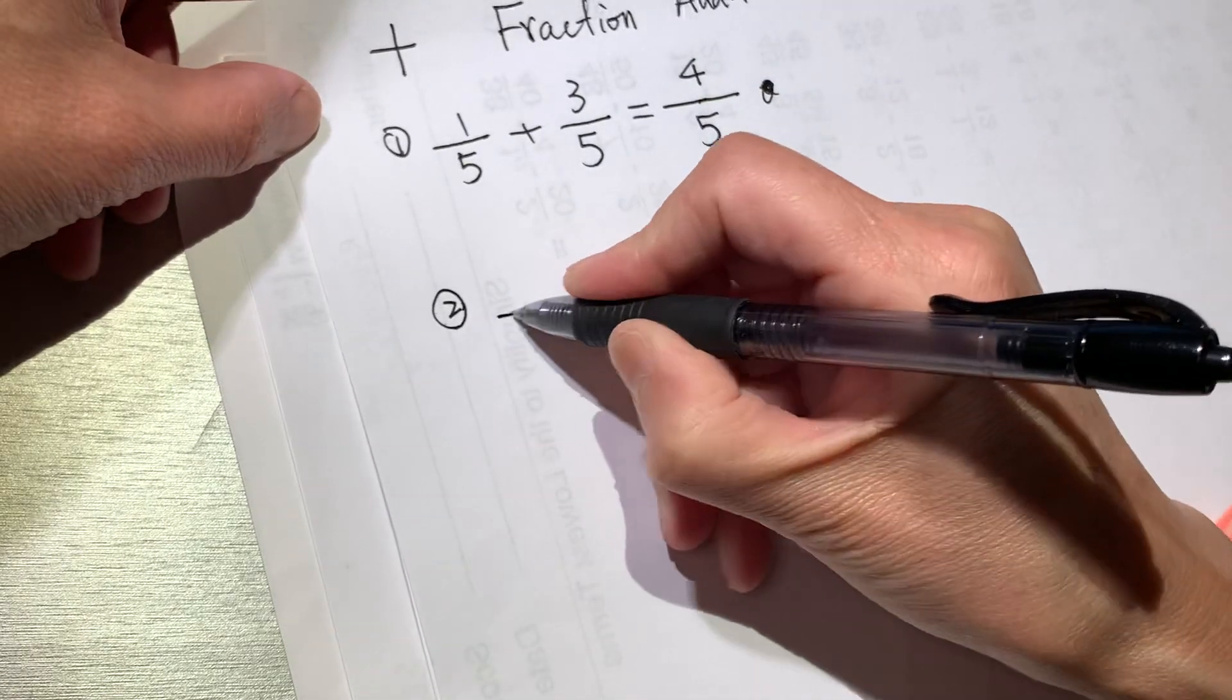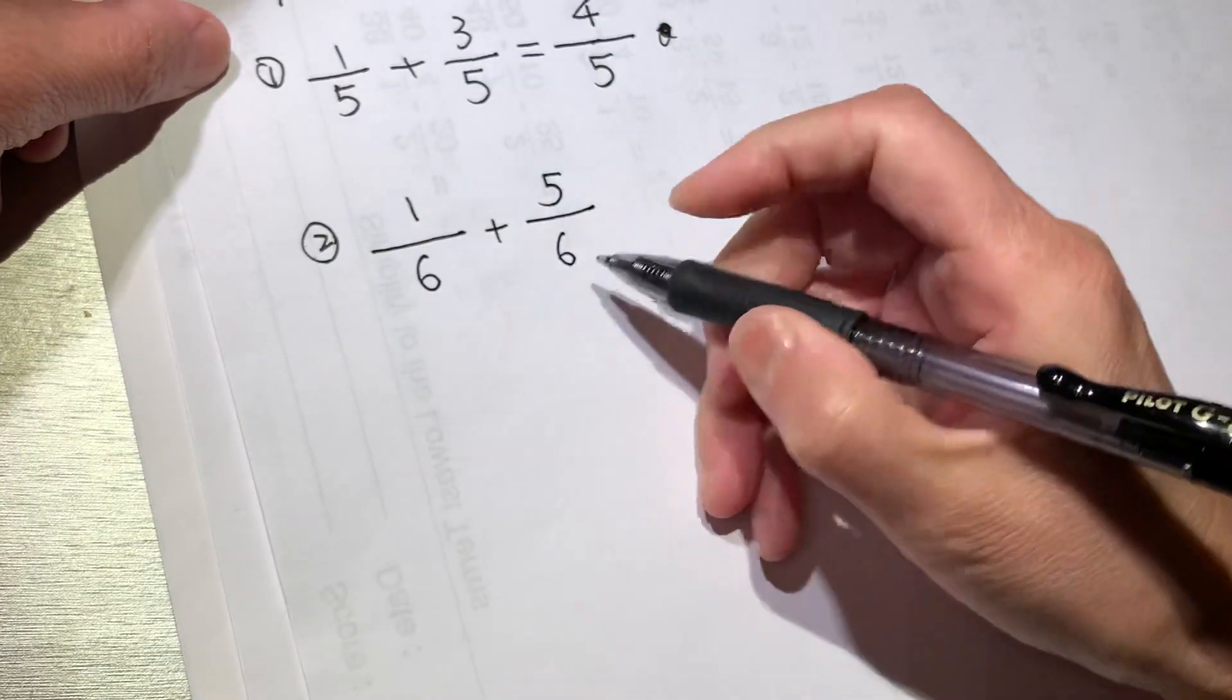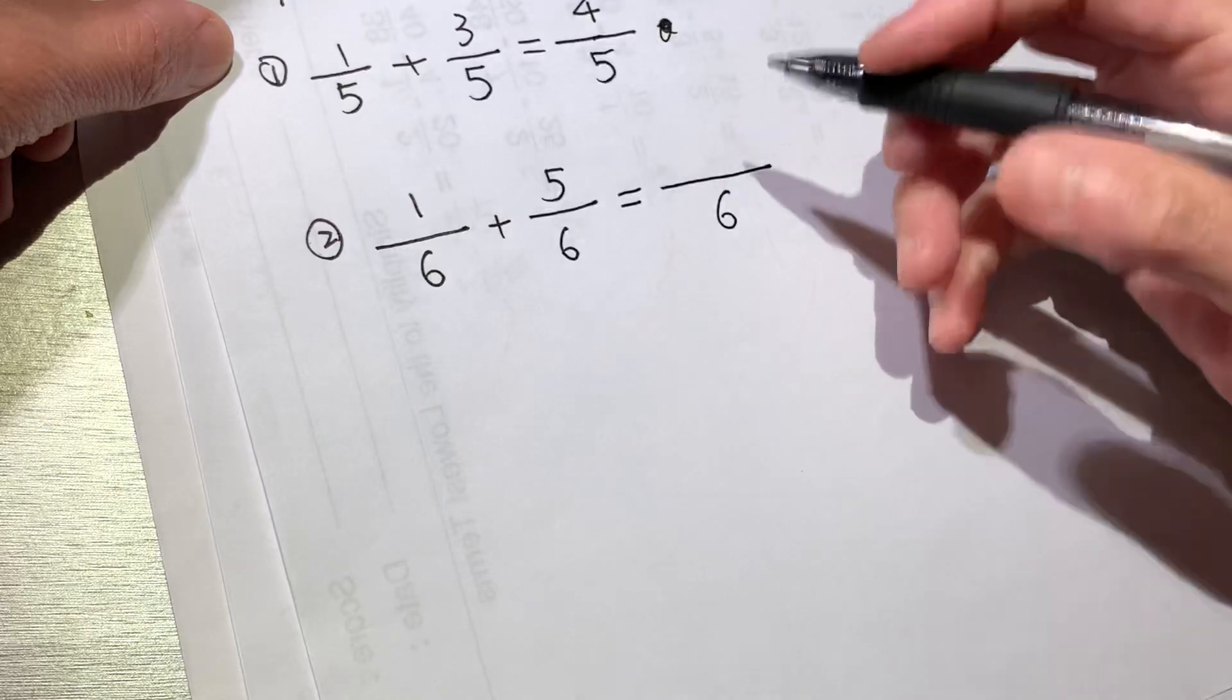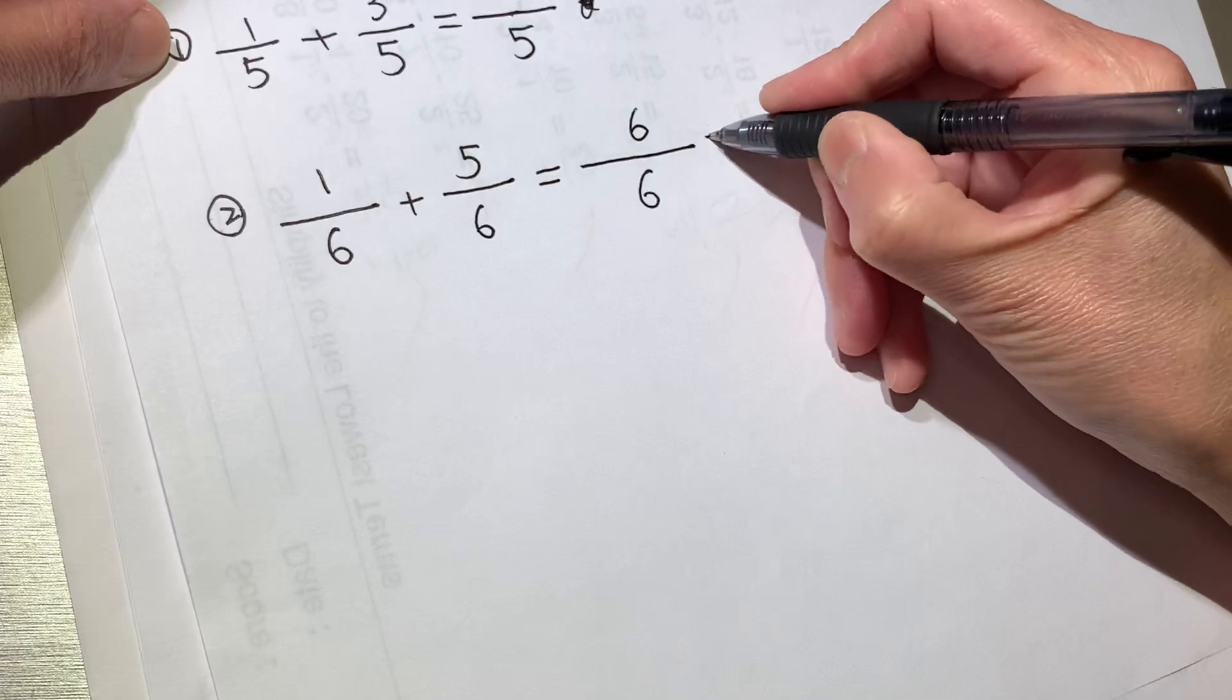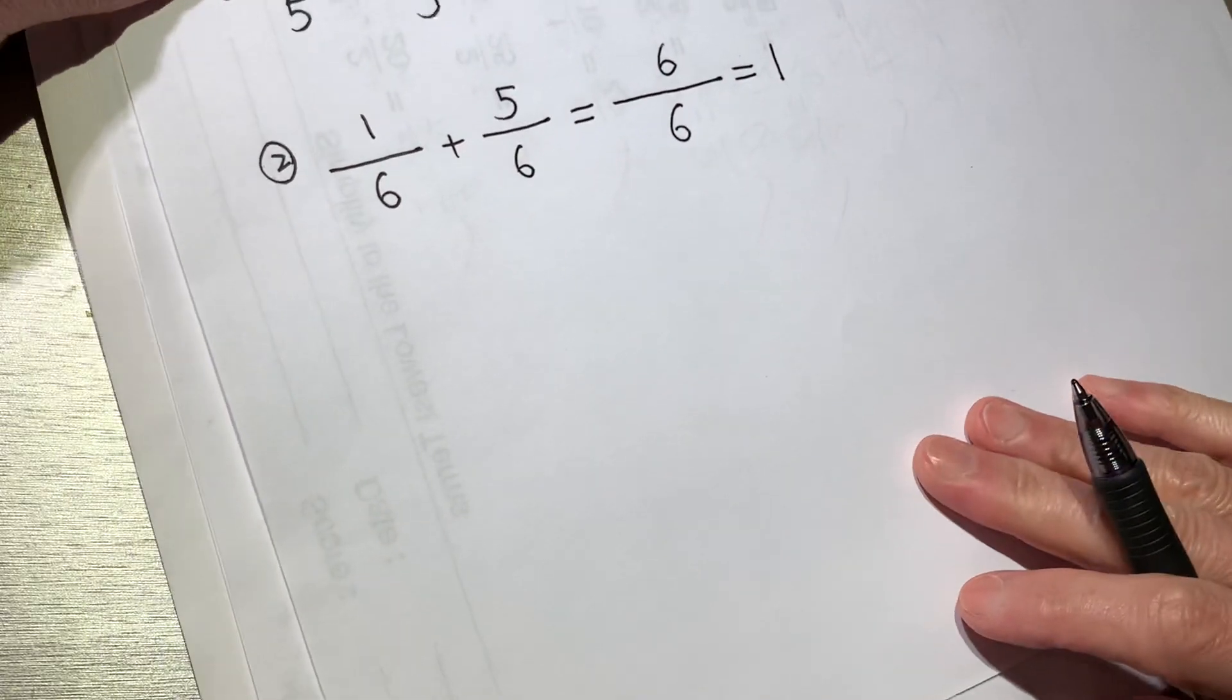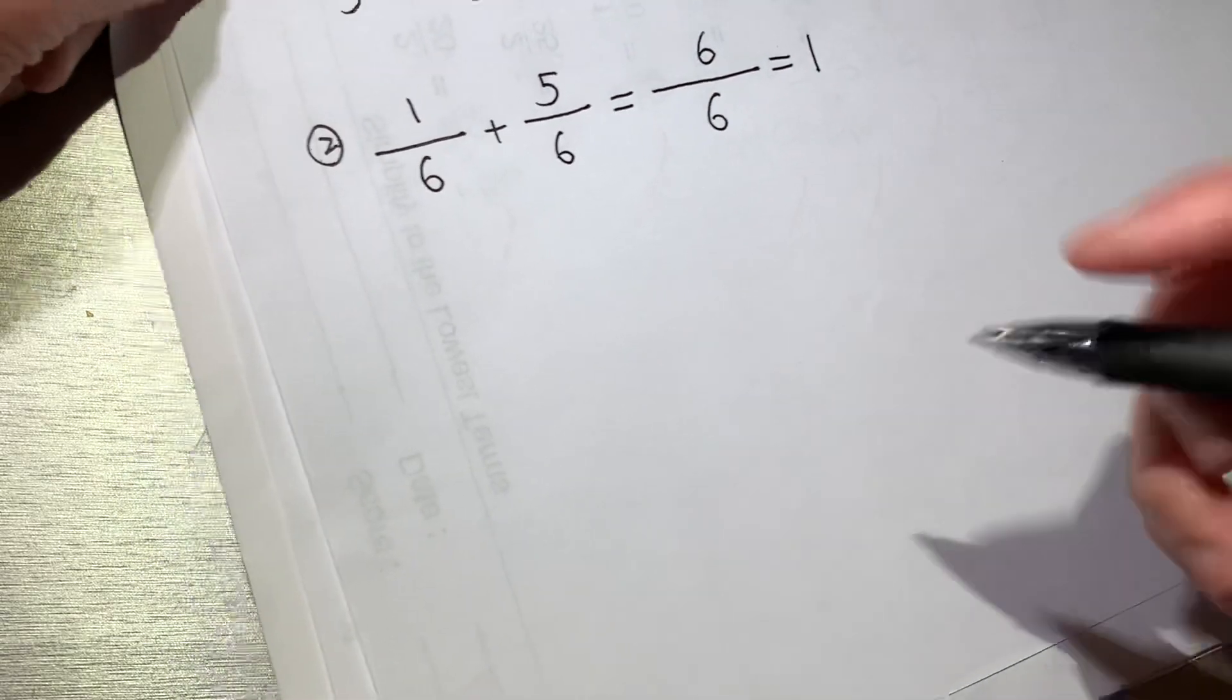Second, the same thing. One-sixth plus five-sixths. So the bottom is the same, denominator is the same. Copy it. And the top, 1 plus 5 is 6. 6 over 6 is a whole, is 1. So whenever you get a result, try to make it as simple as possible, the simplest fraction or mixed number, whichever way you need to change.